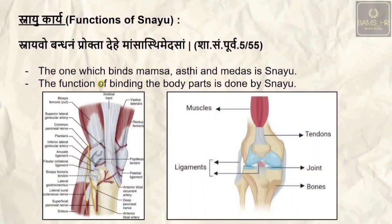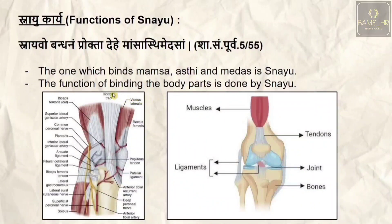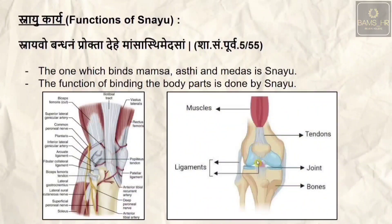Regarding snayu karya — the function of snayu — it primarily performs a binding function. Sharangadhara in the Purva Khanda states: snayu bandana prokta dehe maamsasthimedhasam — snayu does the binding function of maamsa (muscles), asthi (bones), and medas (fatty tissues). The binding of body parts is the main function of snayu.